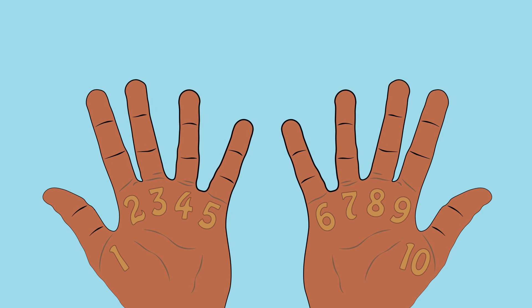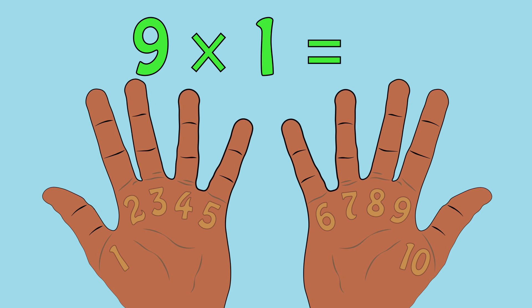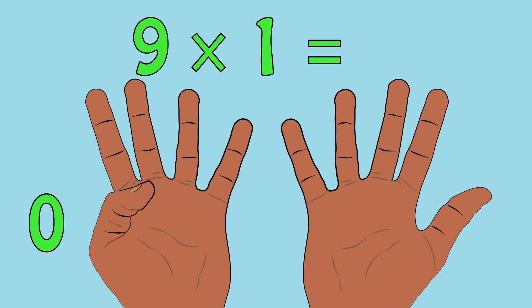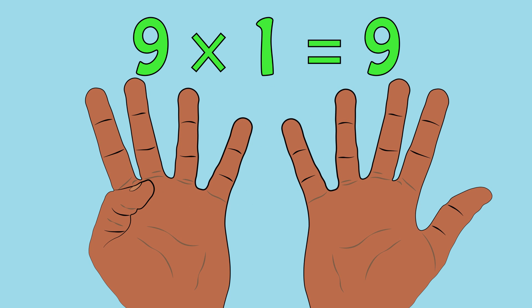Let's get the easy one out of the way. What is 9 multiplied by 1? Take away the finger we labelled 1. There are 0 fingers to the left of it and 9 to the right. So 9 times 1 equals 9.